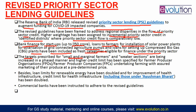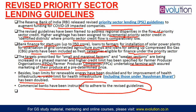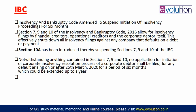Targets for small and marginal farmers and weaker sections — already categories in priority sector lending — are being increased in a phased manner. Higher credit limits have been specified for Farmer Producer Organizations (FPOs) and farmer producer companies undertaking farming with assured marketing at a predetermined price. Loan limits for renewable energy and health infrastructure credit limits have also been doubled. Commercial banks have been instructed to adhere to the revised guidelines.